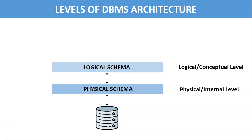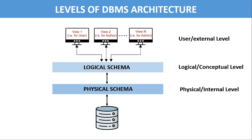The second level is logical schema, also called the conceptual or logical level, which is at a higher level than the physical level. This level represents the community view of the database and describes what data is stored within the database and the relationships among the data. The third level is external schema, which is the highest level in the three-level architecture and closest to the user. It is also known as the view level. The external level only shows relevant database content to users in the form of views and hides the rest of the data. There may be a number of external views for different users.